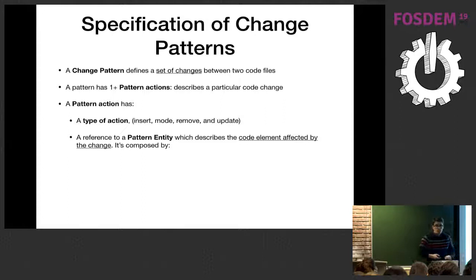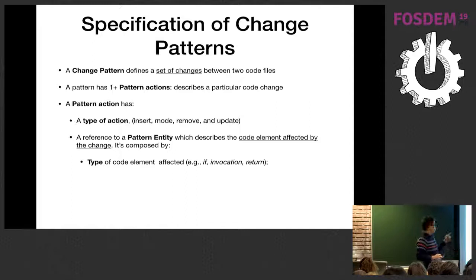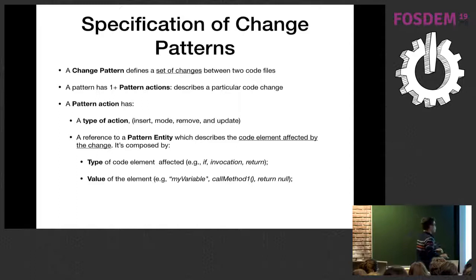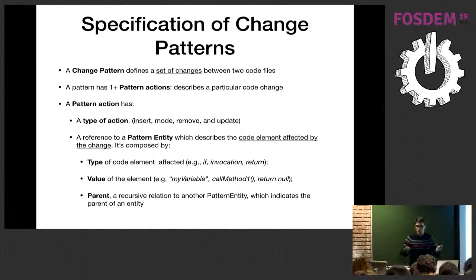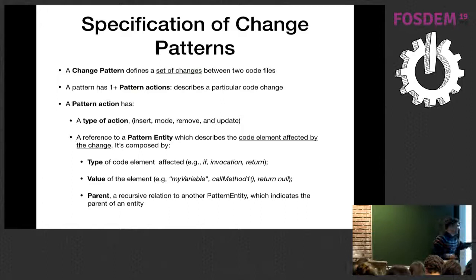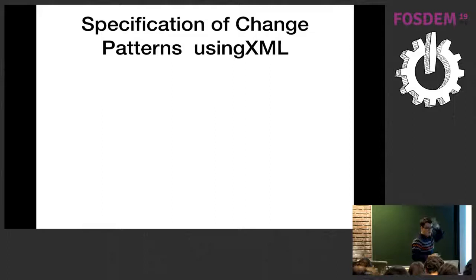A pattern entity describes the code element affected by the change. It has three properties: the type — for instance return, if, while, expression, or parameter; the value — for instance a parameter named 'my parameter,' 'my method call,' or 'return null'; and the parent, which is a reference to another parent entity. Using the parent, we can say 'I want to detect all method invocations that are inside an if condition.' The parent allows us to express the affected entity and its structural context.